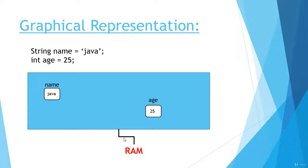So this is the concept of how a variable is declared and how it is stored in memory. If you are confused with string and integer, we will discuss those in our next video where we learn about data types. There are a bunch of data types in Java that we can use to store our data, so don't worry about string and integer right now — just focus on variables. The name and the age are the variables that are storing some data.